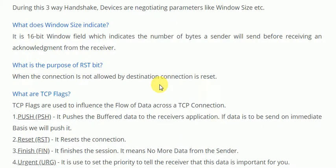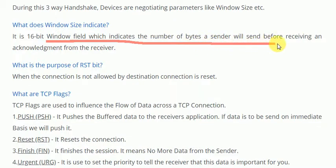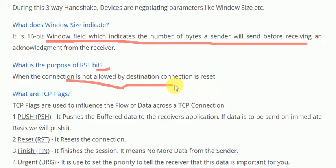The next question is: what does the window size indicate? Window size indicates the maximum number of bytes we can send from source to destination at one time. It is a 16-bit field, so we can send up to 16 bytes at a time. What is the purpose of the RST bit? When a connection is not allowed by the destination, the connection is reset.